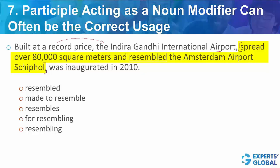Airport spread over such and such area — we have a quality of the airport being talked about, spread over so much area. And you have an 'and' here, a conjunction. So the information that follows must be similar to the information that precedes. You have a quality here — spread over such and such area — so after 'and,' we also need a quality.